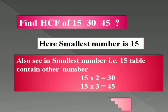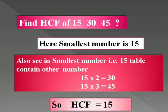We know that 15 × 2 = 30 and 15 × 3 = 45, so we get the answer: the Highest Common Factor is equal to 15. First, find the smallest number, which is 15, then check whether the other numbers appear in that smallest number's table. So the answer is 15.